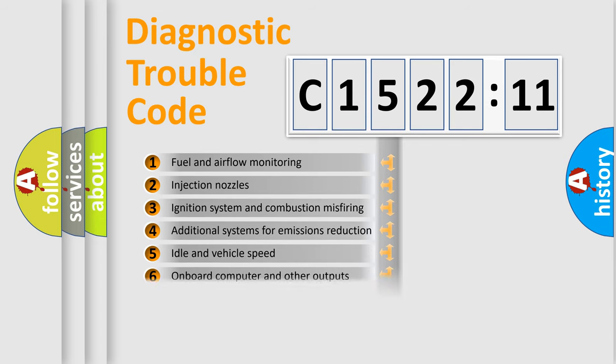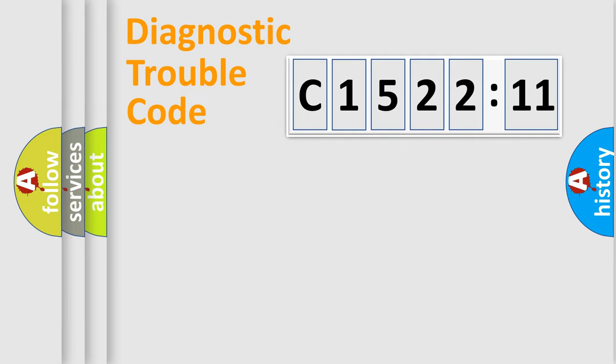The third character specifies a subset of errors. The distribution shown is valid only for the standardized DTC code. Only the last two characters define the specific fault of the group.